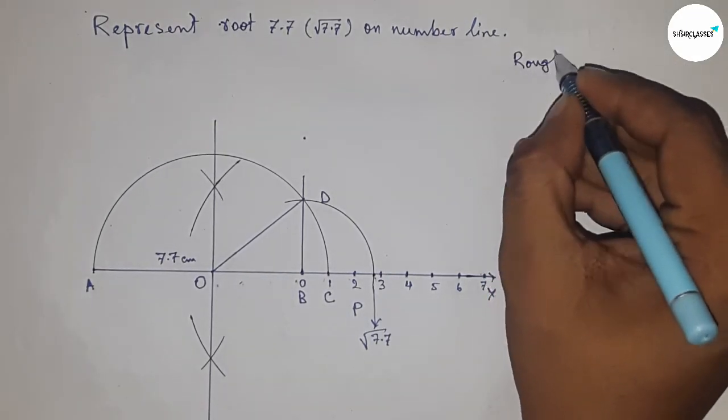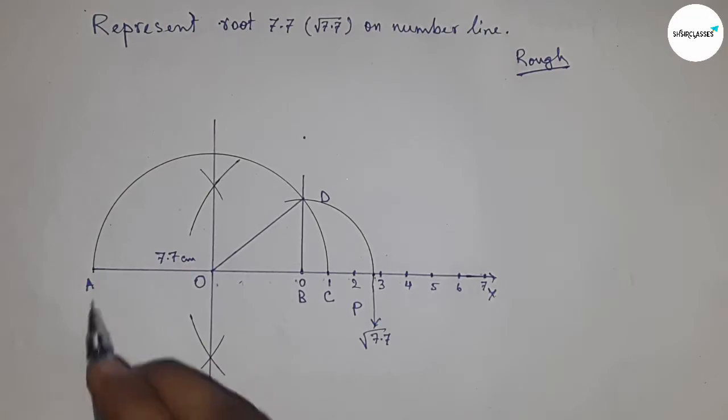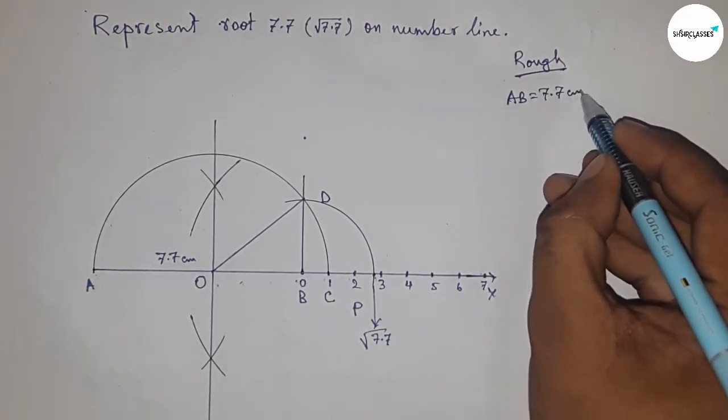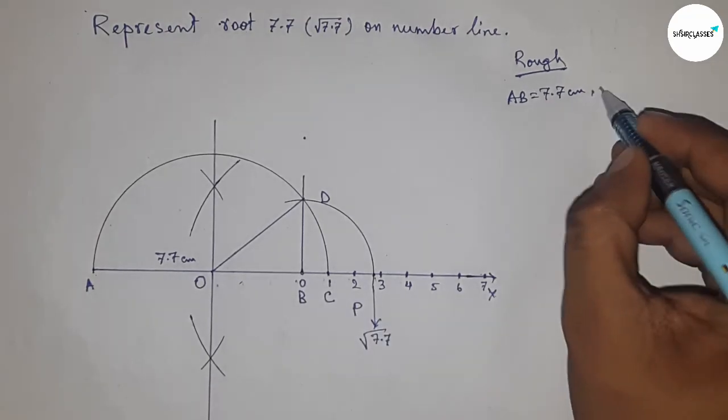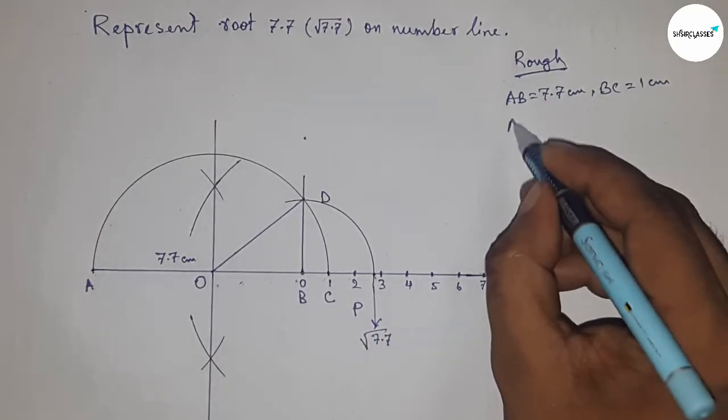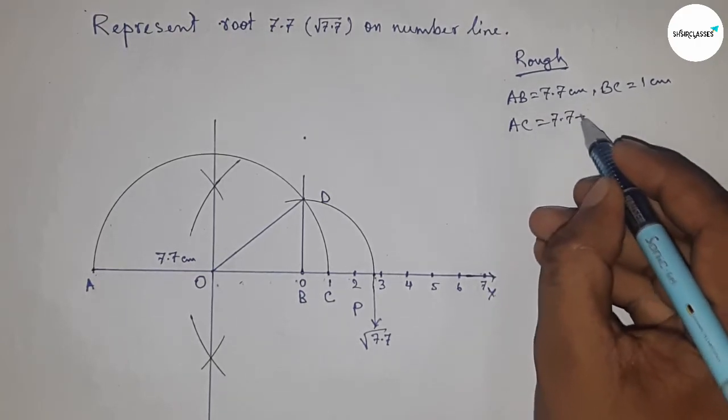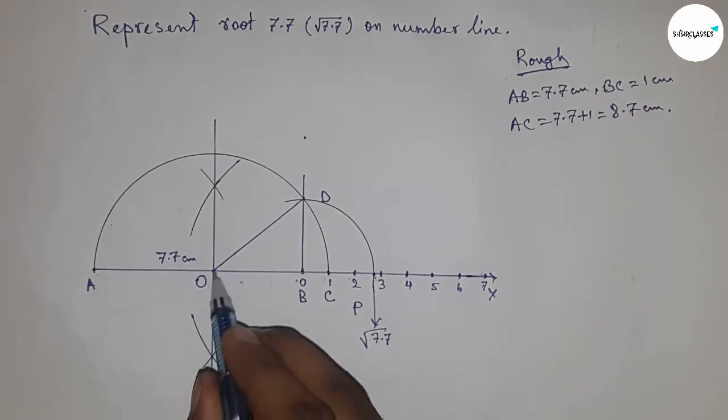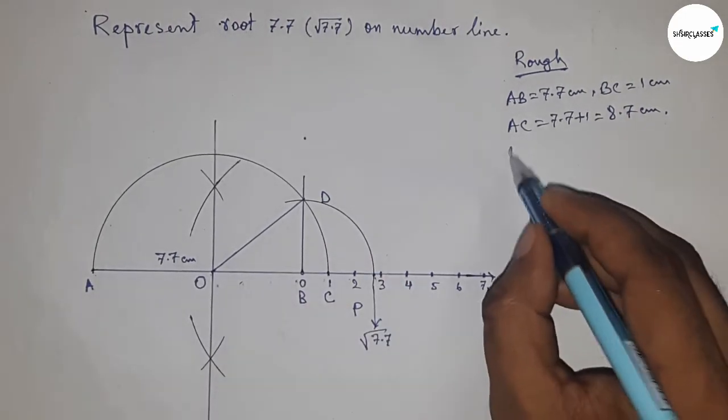Now let's discuss the calculations. Given: AB = 7.7 cm and BC = 1 cm. So we can write AC = 7.7 + 1 = 8.7 cm. The radius OA = OC = OD = 8.7/2 cm.